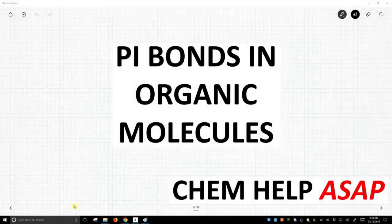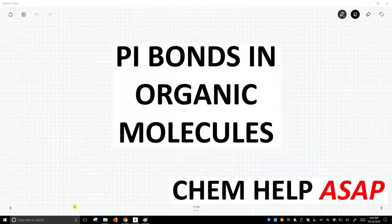Hello from Chem Help ASAP. All the bonding we've discussed so far in this playlist has focused upon sigma bonding, but there's another type of bonding that's called pi bonds.